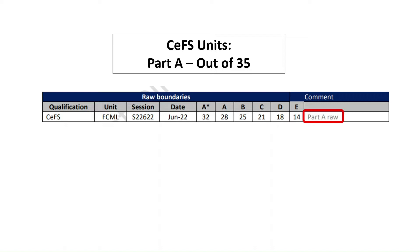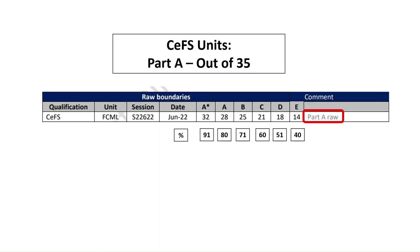On your screen, you can see the grade boundaries for the raw marks out of 35 for Part A in the June 2022 session. So for June 2022, you needed 32 marks for an A star, 28 for an A, 25 marks out of 35 for a B, and so on — equivalent to 91%, 80%, 71% for B, etc. That's for Part A, which is the multiple choice out of 35.